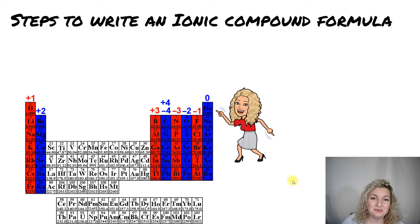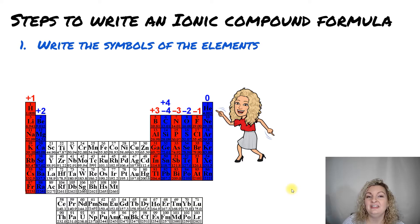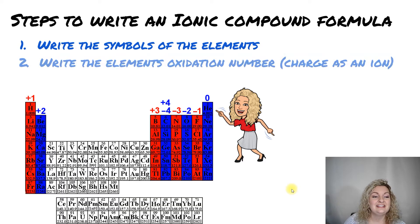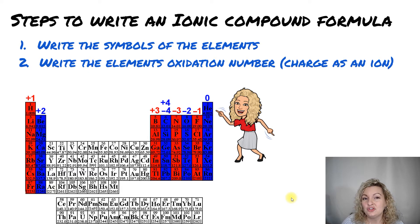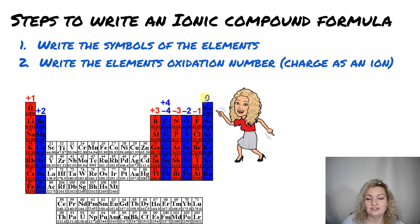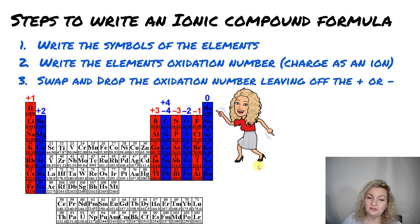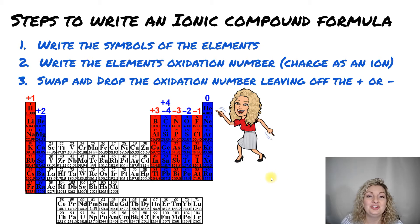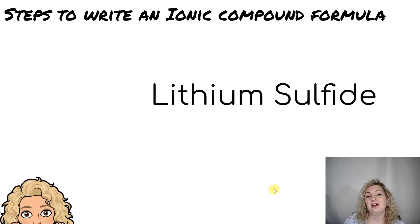I'm going to teach you through the steps of how to do this. Step one, you're going to write the symbol of the elements. Step two, you're going to write the elements' oxidation numbers, which is the charge that they become when they're ions. I've written them all here so you can see their oxidation numbers. Then you're going to use the swap and drop method to swap those oxidation numbers and drop them down. We're not going to be including the positive or negatives any longer. So let's go ahead and try one out.